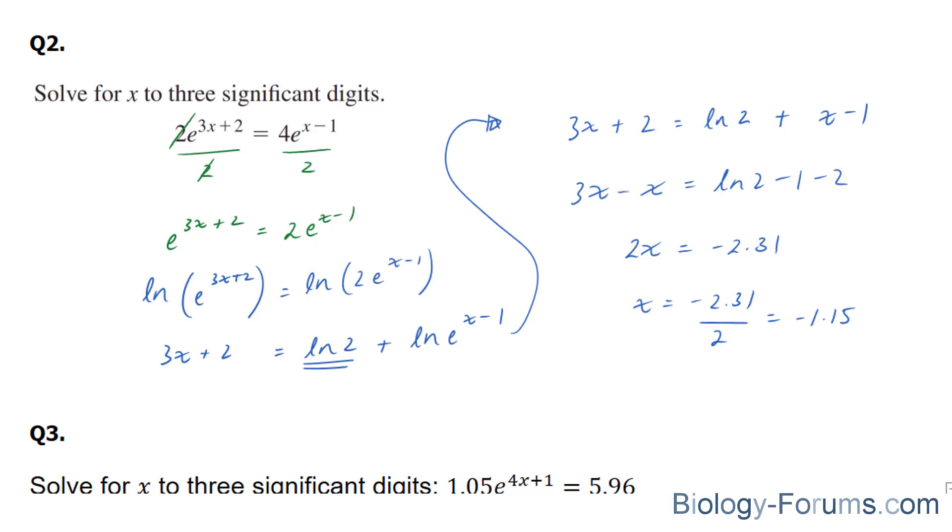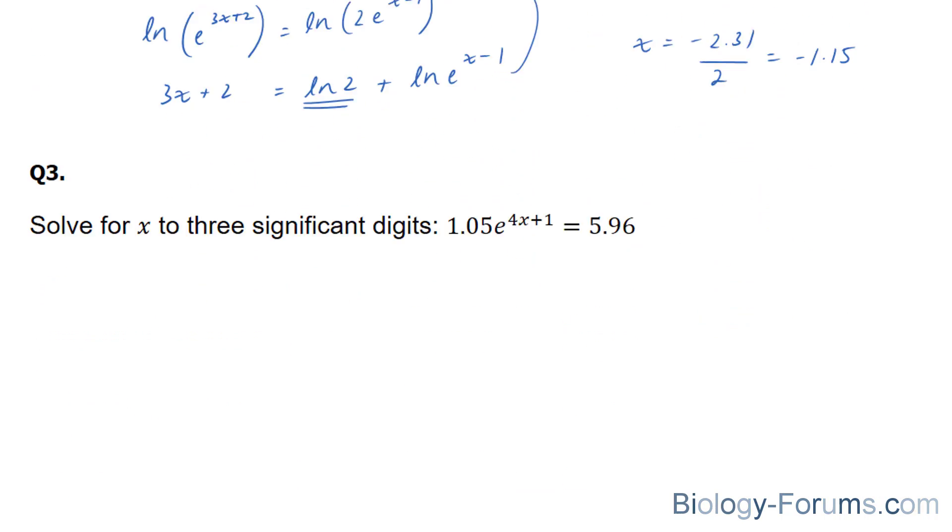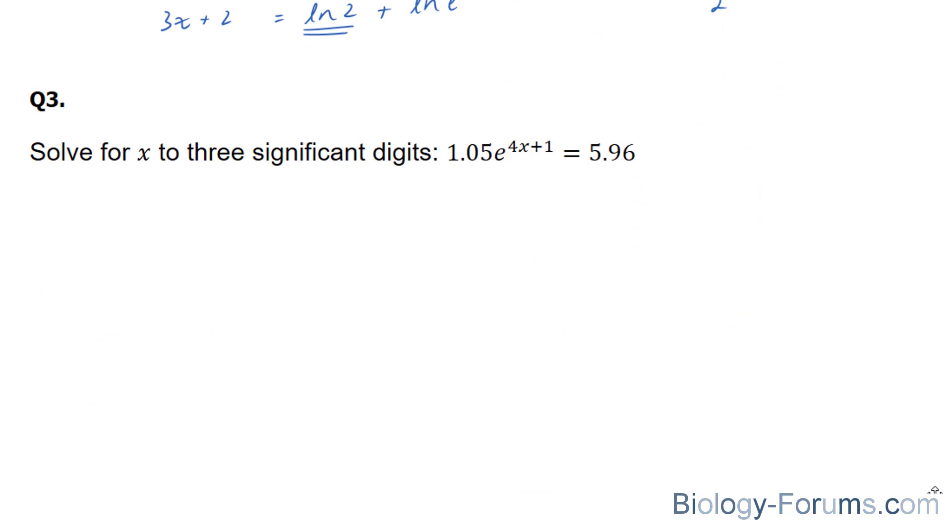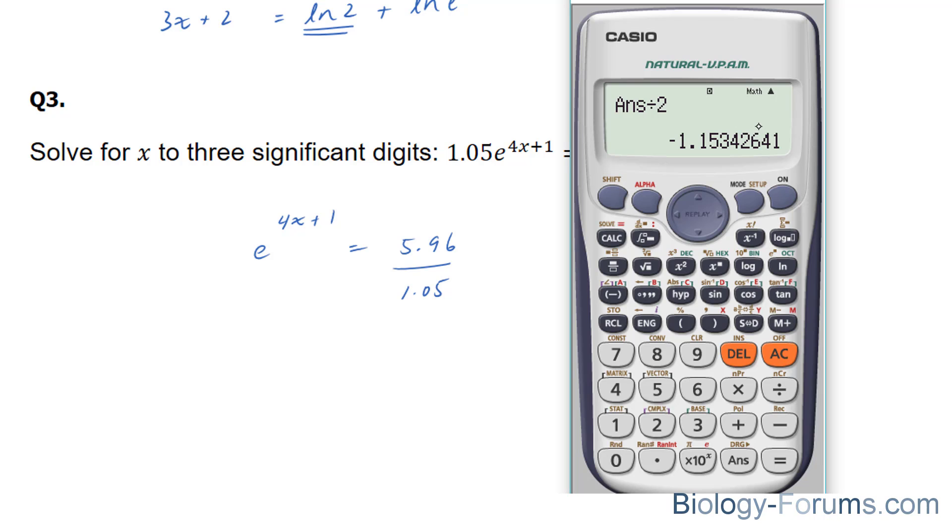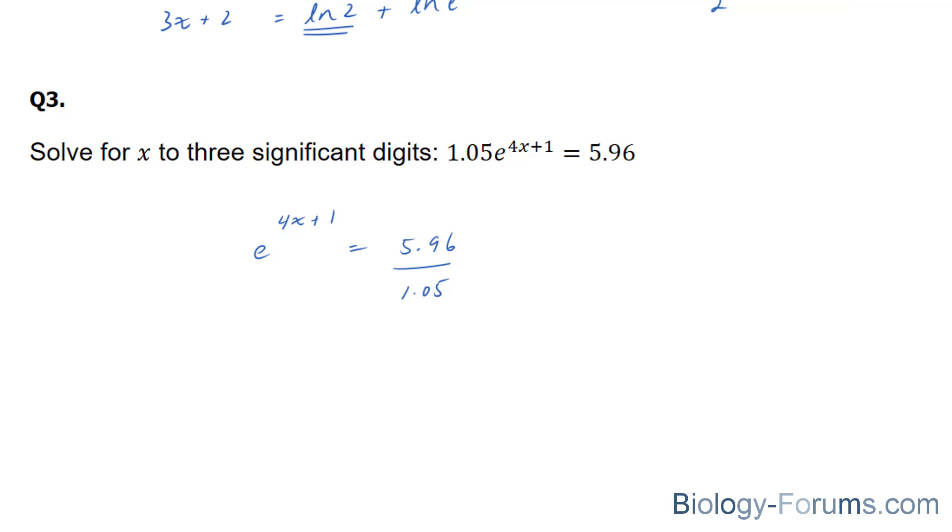Lastly, we will answer this question, and we'll start off by dividing both sides by 1.05. If we do that, we end up with 4x plus 1, and on the right side, we end up with 5.96 divided by 1.05. Let's use our calculator to figure that out. Actually, before we do that, let's pretend we have the answer and let's continue to ln both sides now.